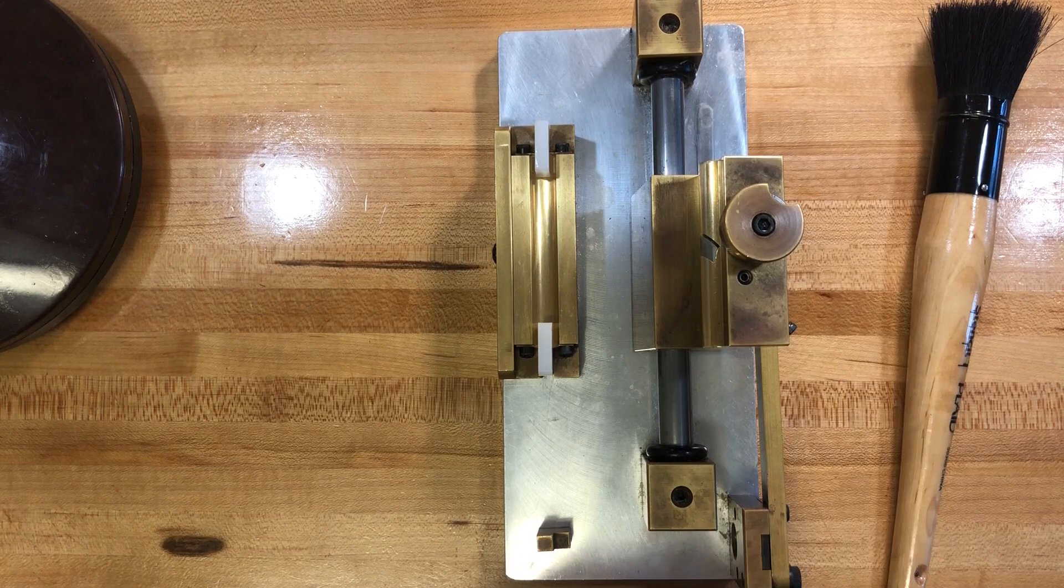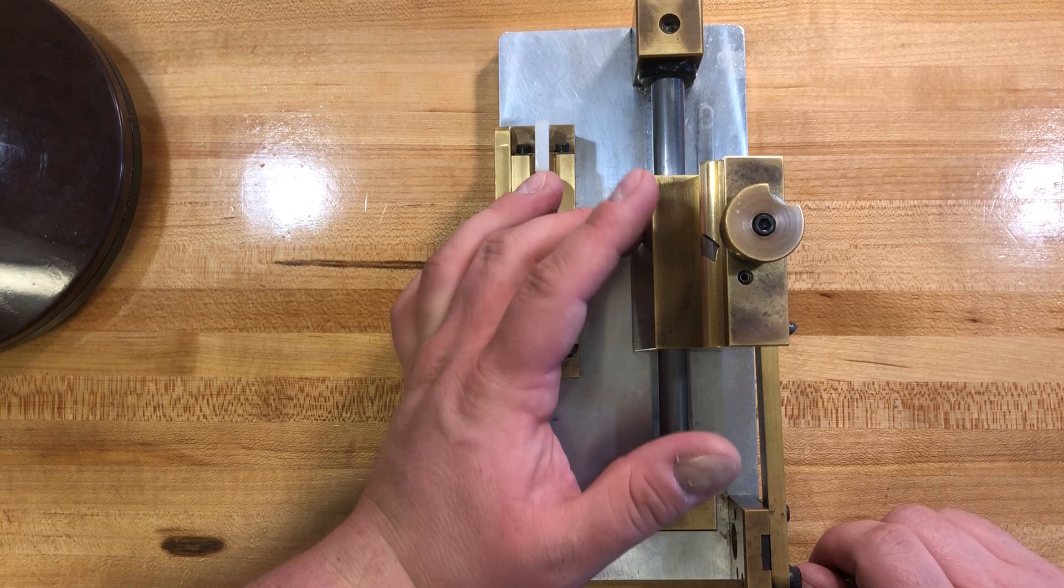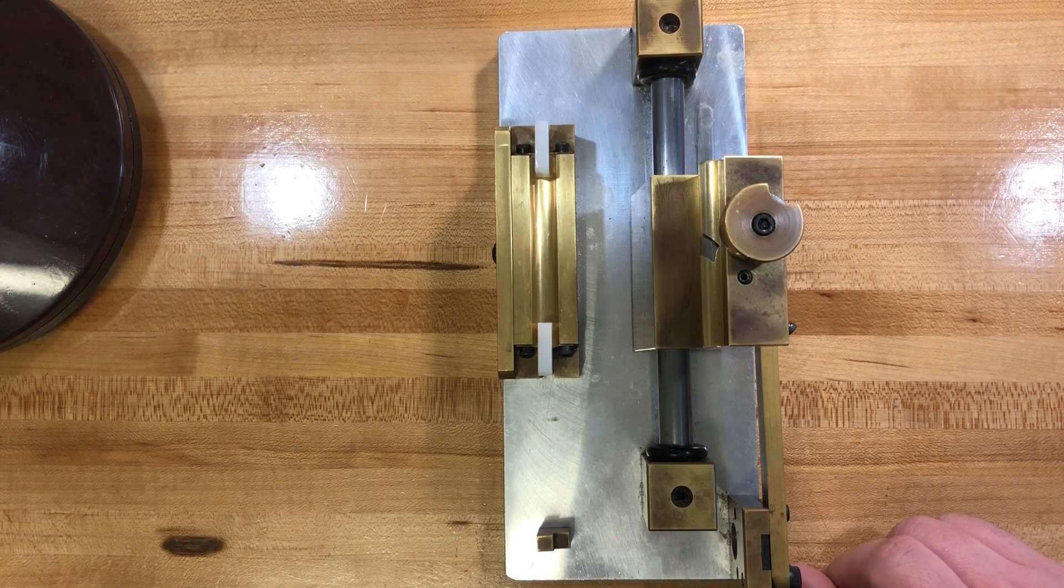Because moisture is what we're really concerned about here. We don't want this steel blade to rust. The brass will not rust. It's not able to rust. But the steel will. And we don't want that to happen.